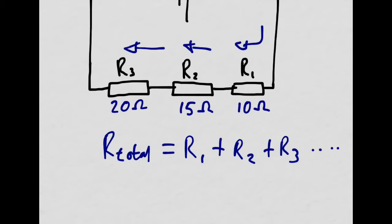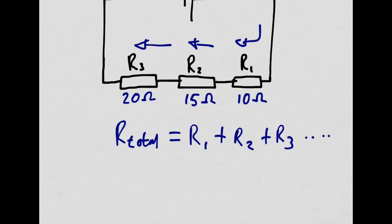And if you've got any more devices — R4, R5, R6 and so on — you just keep adding. This one's only got three, so we're adding three together. The total resistance of this circuit is 10 plus 15 plus 20, which gives us 45 ohms.